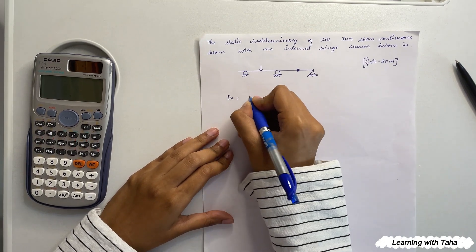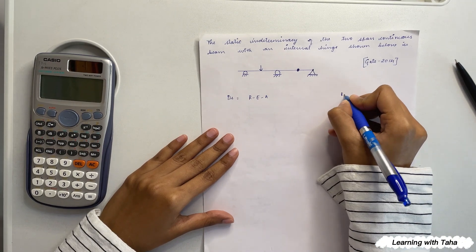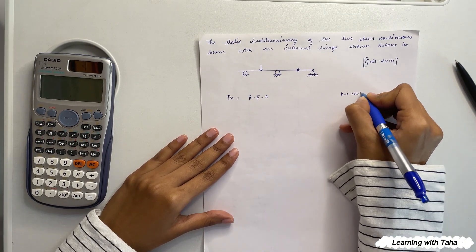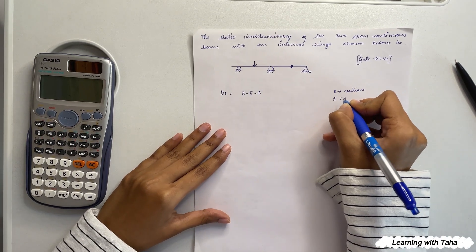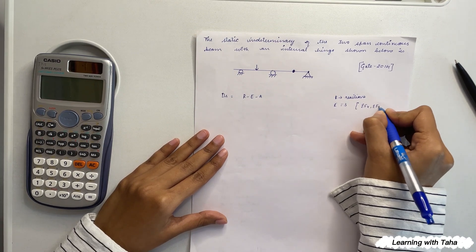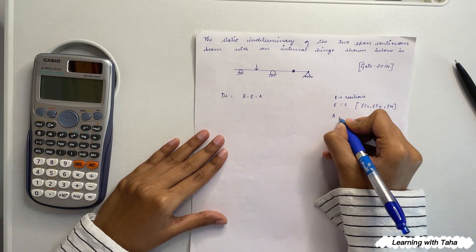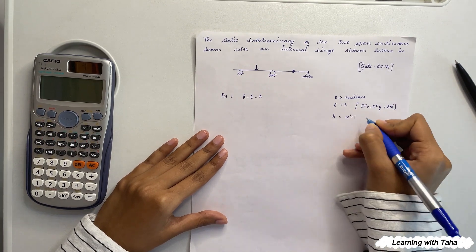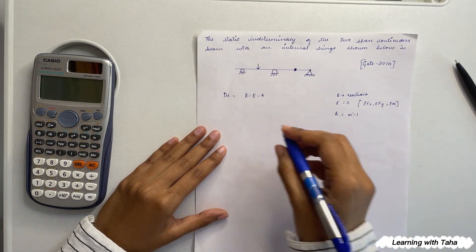is given by R minus E minus A, where R are the reactions. E is equals to 3, which is nothing but summation Fx, summation Fy, and sum of moments. And also A is equals to m dash minus 1, which is nothing but the members connecting the hinge minus 1.